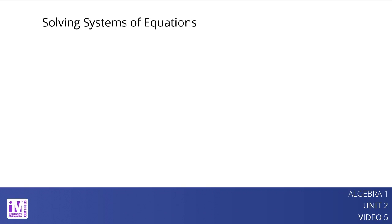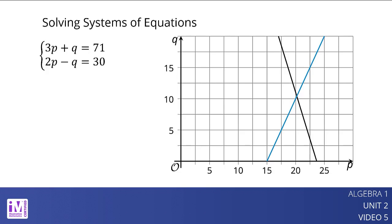Here is a system of equations. The graphs of the equations show an intersection at approximately 20 for p and approximately 10 for q. Without technology, it is not easy to tell what the exact values are. Instead of solving by graphing, we can solve the system algebraically.